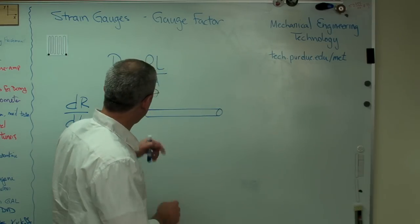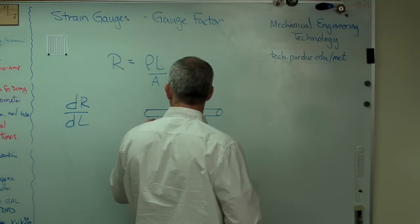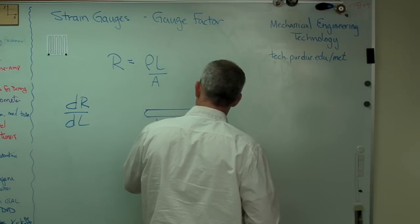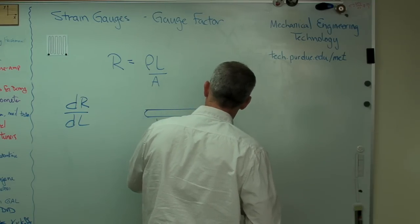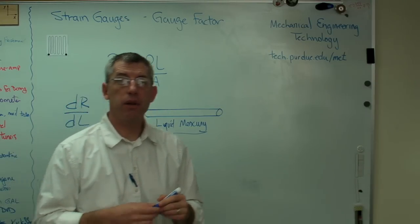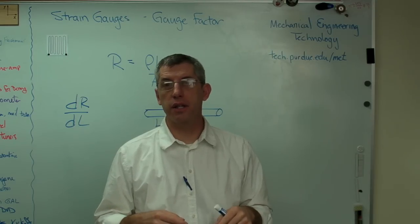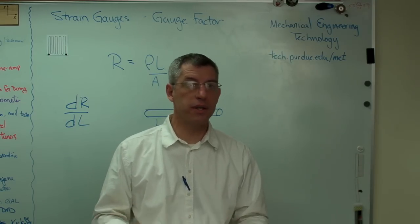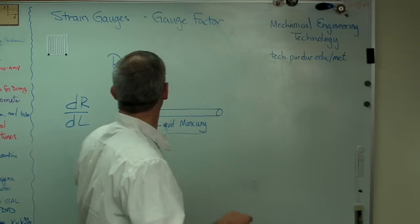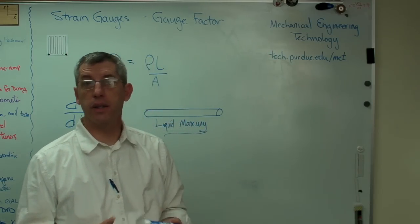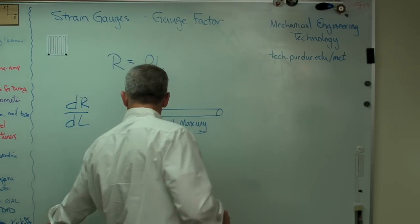So what I'm going to do here is I'm going to use this liquid mercury strain gauge and I'm going to develop the gauge factor for that and it turns out the gauge factor for this is almost exactly what you'd get for one made out of solid metal and including all the second order effects that I'm going to ignore here. So here's how this works.